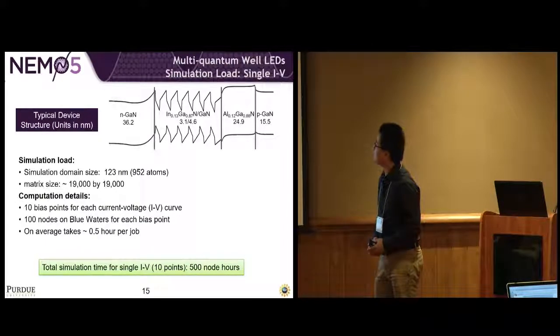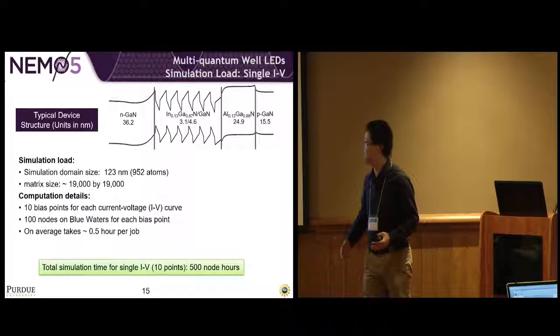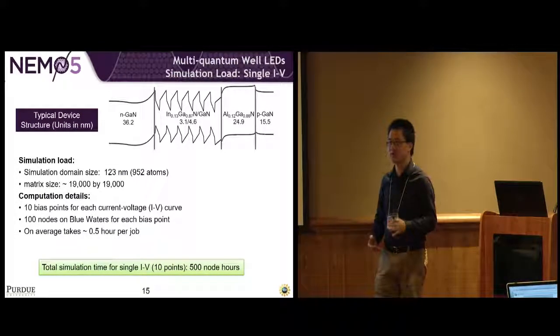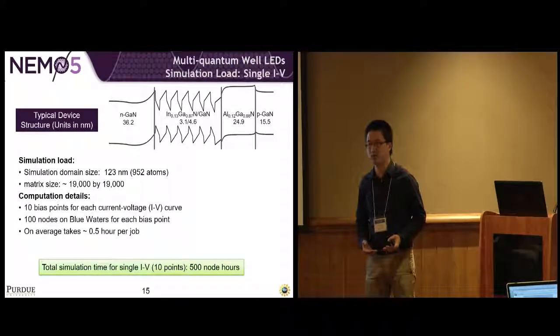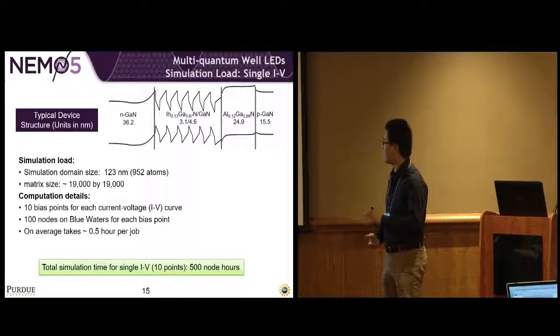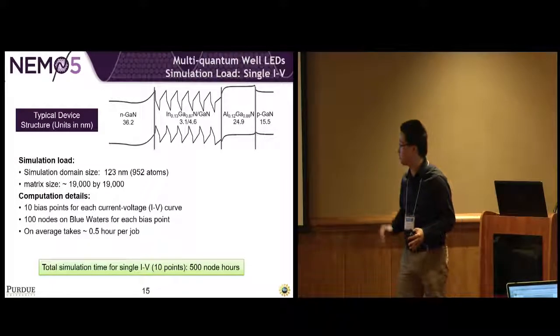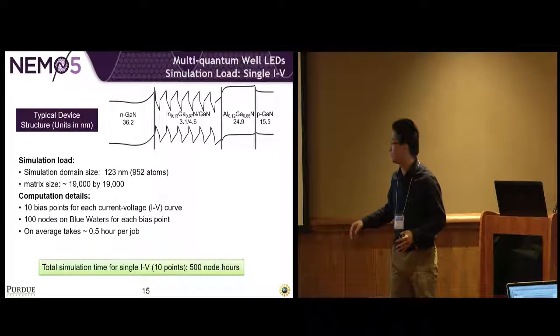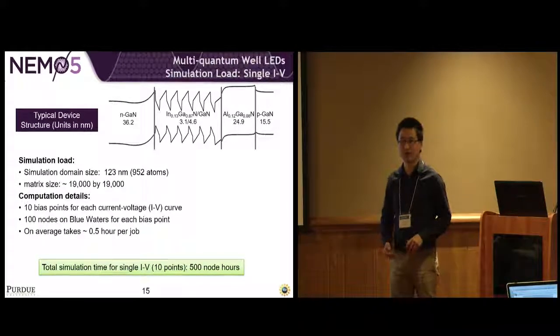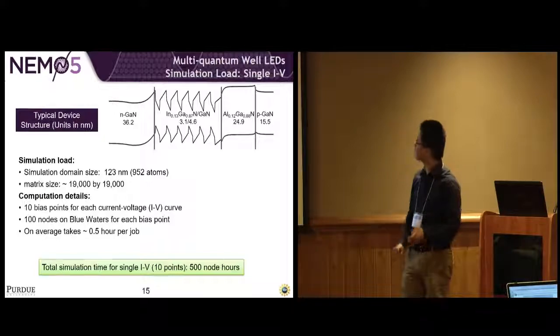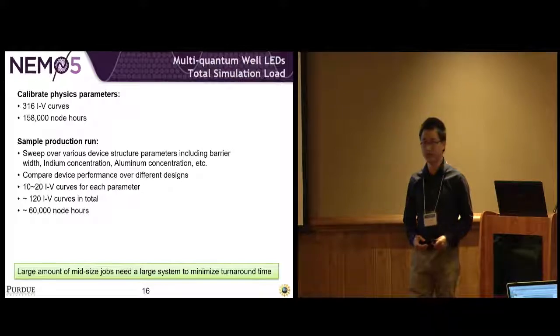Here is an example of the LED device. It has 123 nanometers, about 1,000 atoms in this device. The matrix size in the simulation is 19,000 by 19,000 roughly. We have 10 voltage bias points for one current voltage IV curve. In this case, we use 100 nodes on Blue Waters for one bias point for average half hour, so we use 500 node hours per IV curve.